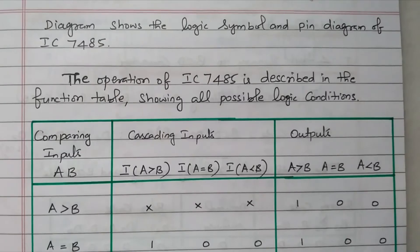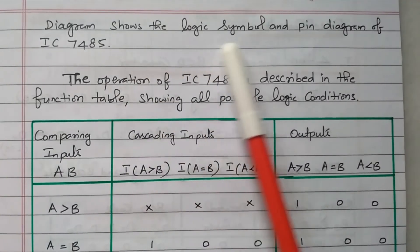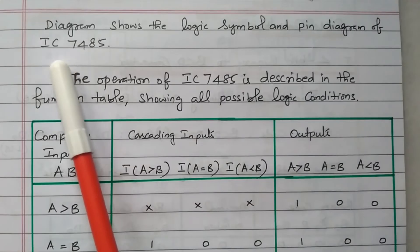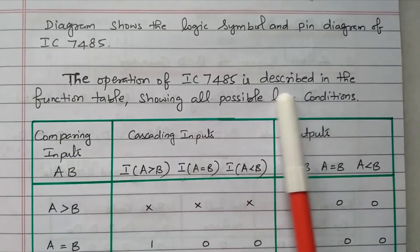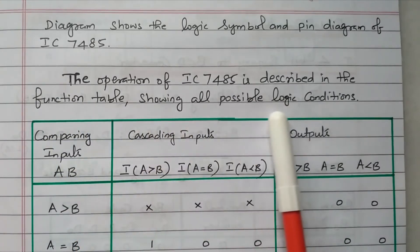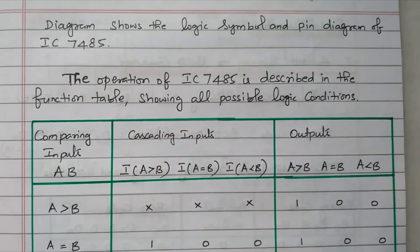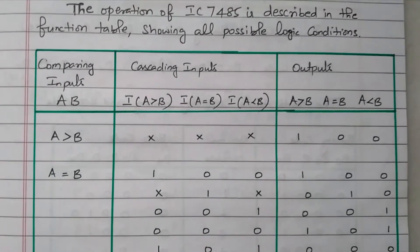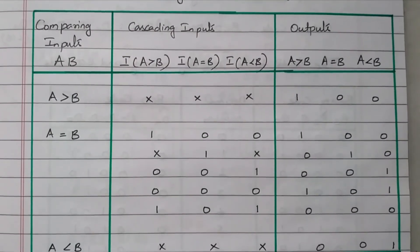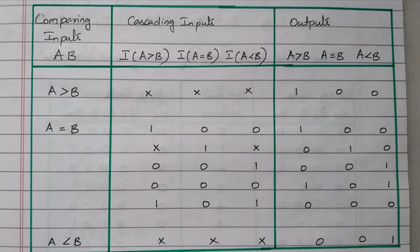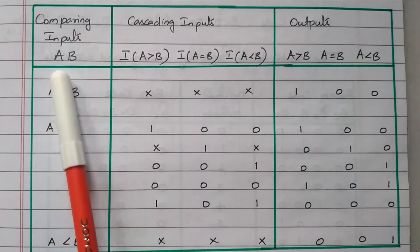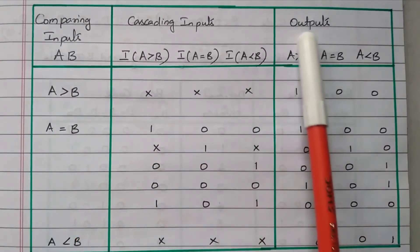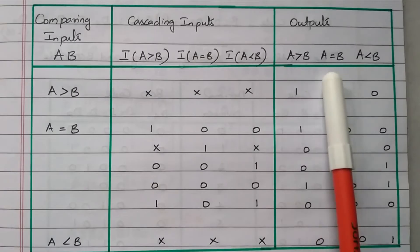The diagram shows the logical symbol and pin diagram of the 7485 as discussed. The operation of IC7485 is described in the function table, showing all possible logic conditions including cascading. By using a single IC the output is obtained very easily; while cascading, we need to check what possibilities are available. The comparing inputs are A and B, the outputs are A-greater-than-B, A-equal-to-B, and A-less-than-B, and the cascading inputs are also shown.